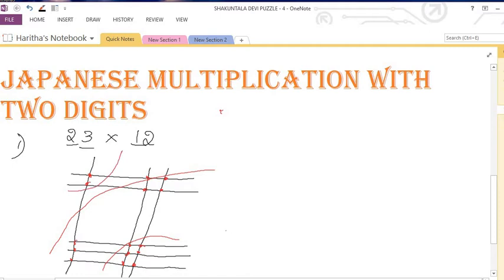Now count how many dots: 1, 2, 3, 4, 5, 6. And here: 1, 2, 3, 4, 5, 6, 7. And here 2. So the answer is 276.